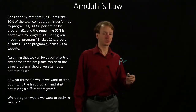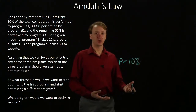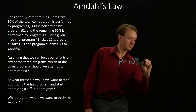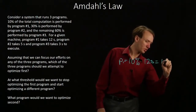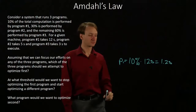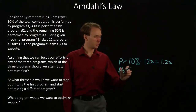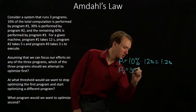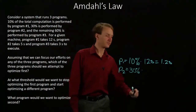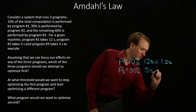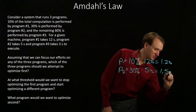Program 1 is 10% of my total computation, and every time I run Program 1 it takes 12 seconds. So on average I spend 1.2 seconds on Program 1. Program 2 is 30% of my total computation, and that's going to take 5 seconds. So 30% times 5 seconds gives me 1.5 seconds.